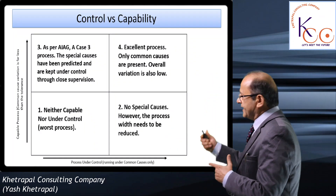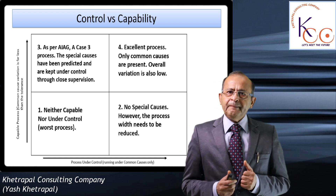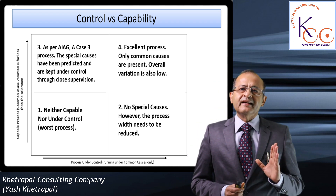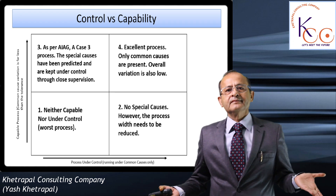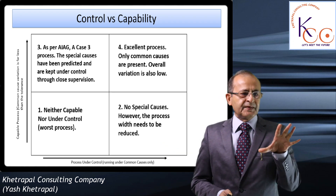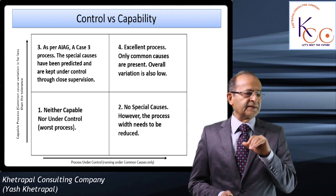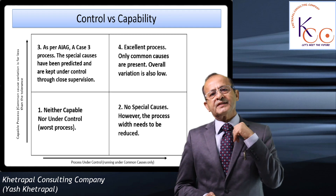To help understand capable process and process under control, refer to AIAG manual page 25. Here is a simplified matrix. Look at Stage 1: the process is neither capable nor under control. We call it a very bad process.